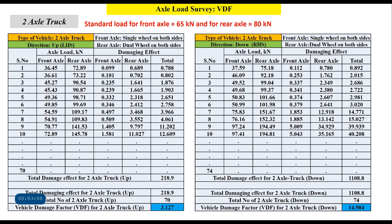Similarly, we do this for two-axle trucks. For a two-axle truck, the front axle has a standard load of 65 kN and the rear axle 80 kN — similar to the bus. The total damage effect of the two-axle truck, summing all values, is 218.9. If we surveyed 70 trucks, the average VDF is 3.127. In the down direction, we surveyed 74 trucks, and the total damage effect is 1108.8, giving a total vehicle damage factor of 14.984.